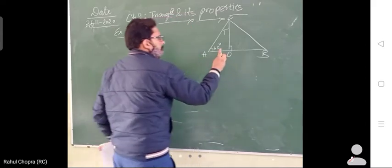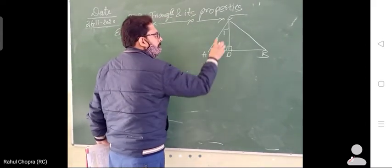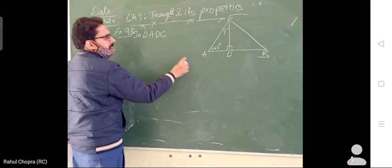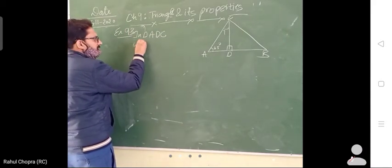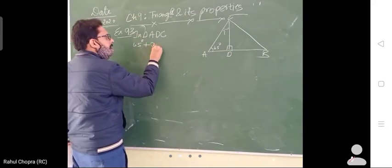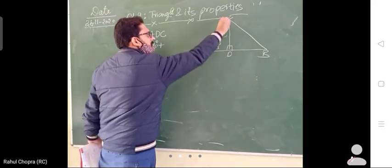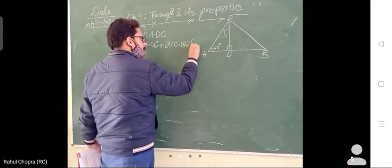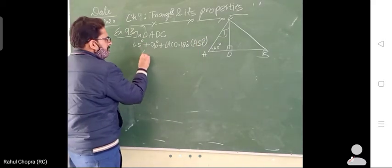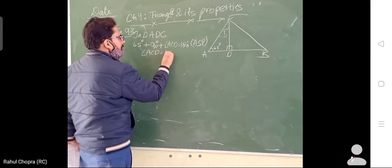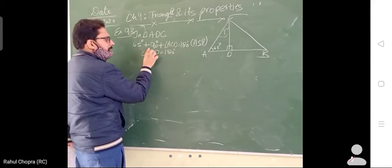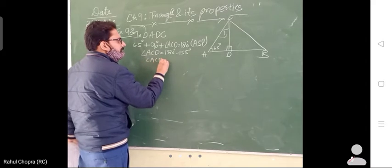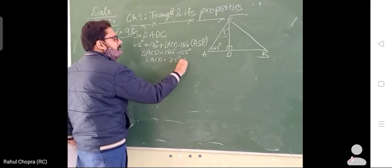This angle is 90 degrees and this one will also be 90 degrees. So we take triangle ADC. In triangle ADC: 65 degrees plus 90 degrees plus angle ACD is equal to 180 degrees, because of the angle sum property. That means angle ACD equals 180 minus 155, so angle ACD is equal to 25 degrees.